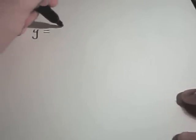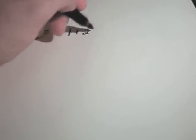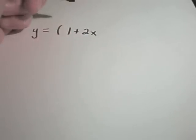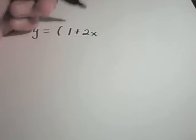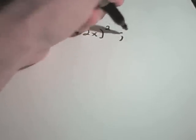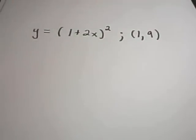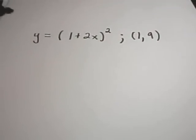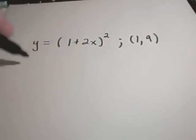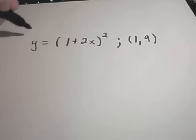Suppose I have the function y equals (1 plus 2x) squared, and we want to find the equation of the tangent line at the point (1, 9). In this case, I'm going to have to take the derivative, and we could call y the same as f(x).